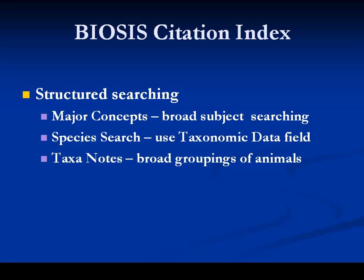I'm going to carry out some searches in Biosis Citation Index. Biosis is a very structured database and I'm going to use that structure to help me with my searching. I'll focus on three types of search: major concepts, which is for broad subject searching; a species search, for which you use the taxonomic data field; and taxonotes, which is for broad groupings of animals.